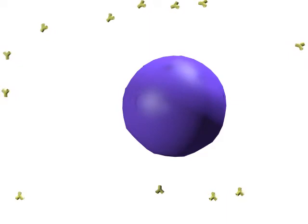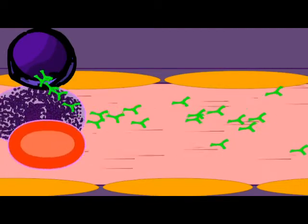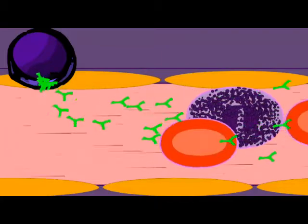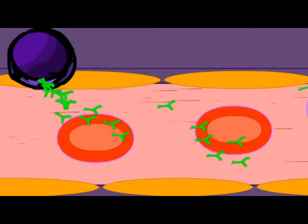The B cells do not have to contact the cells against which they are acting. These antibodies will travel through blood and plasma or the body secretions and seek out and cause the destruction of the microbes.